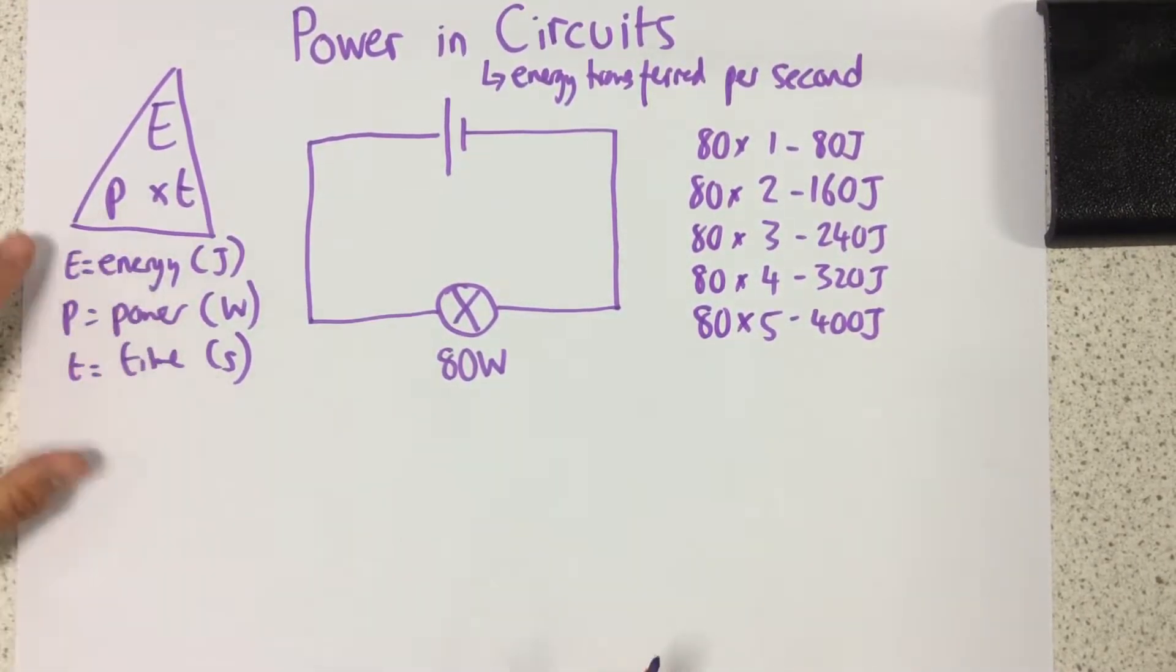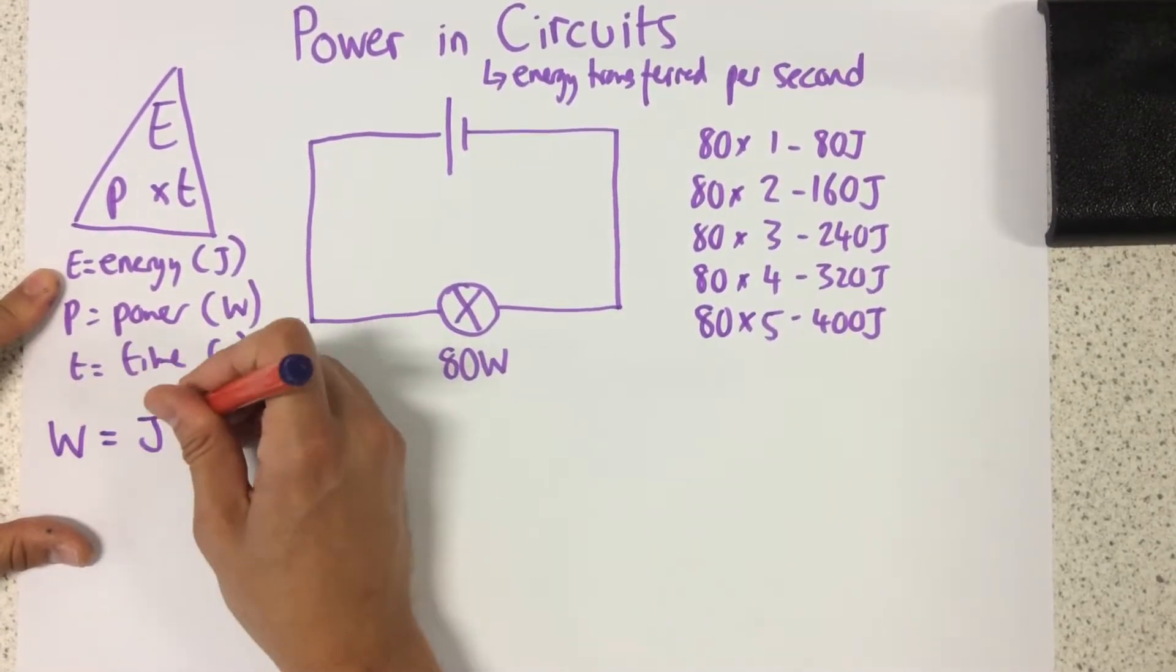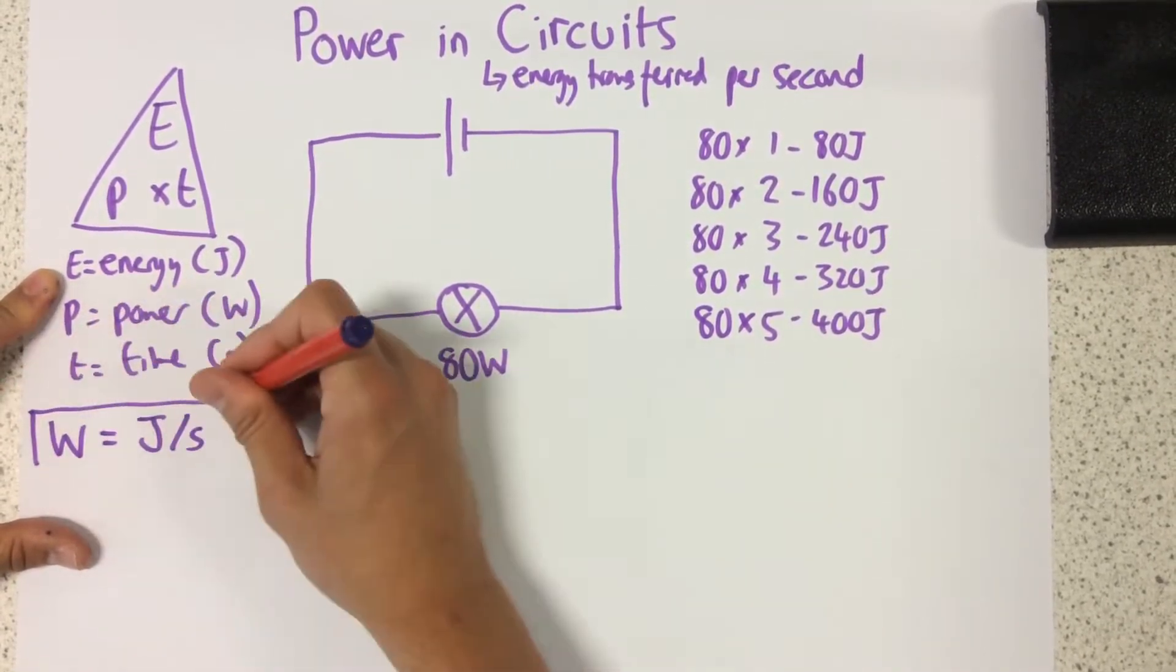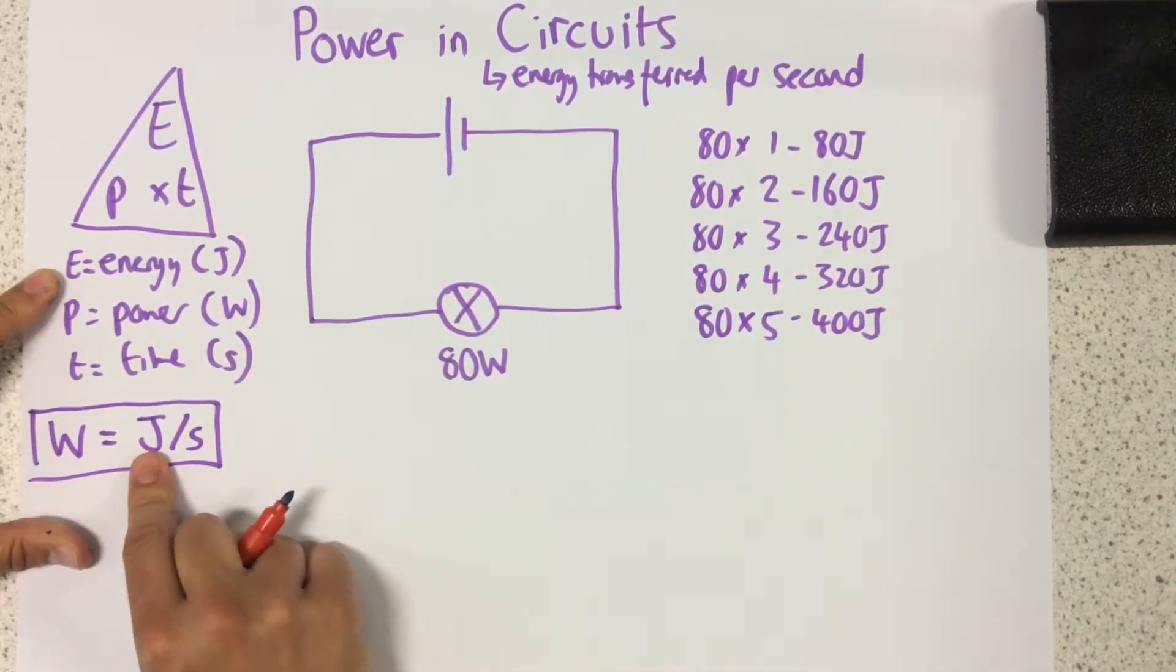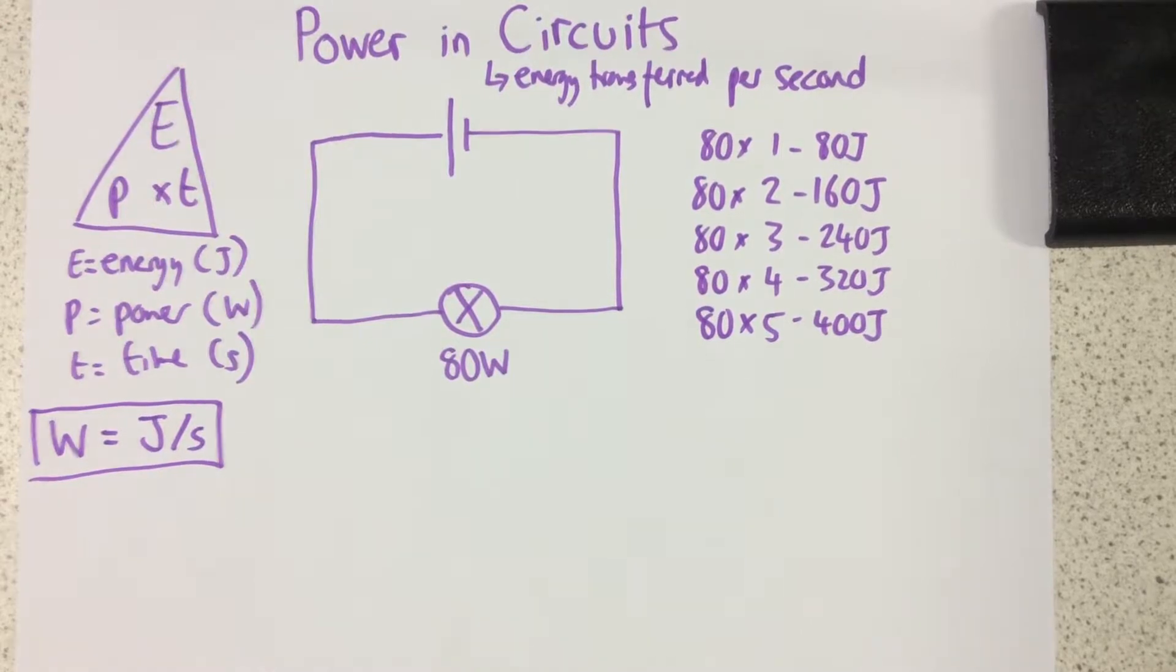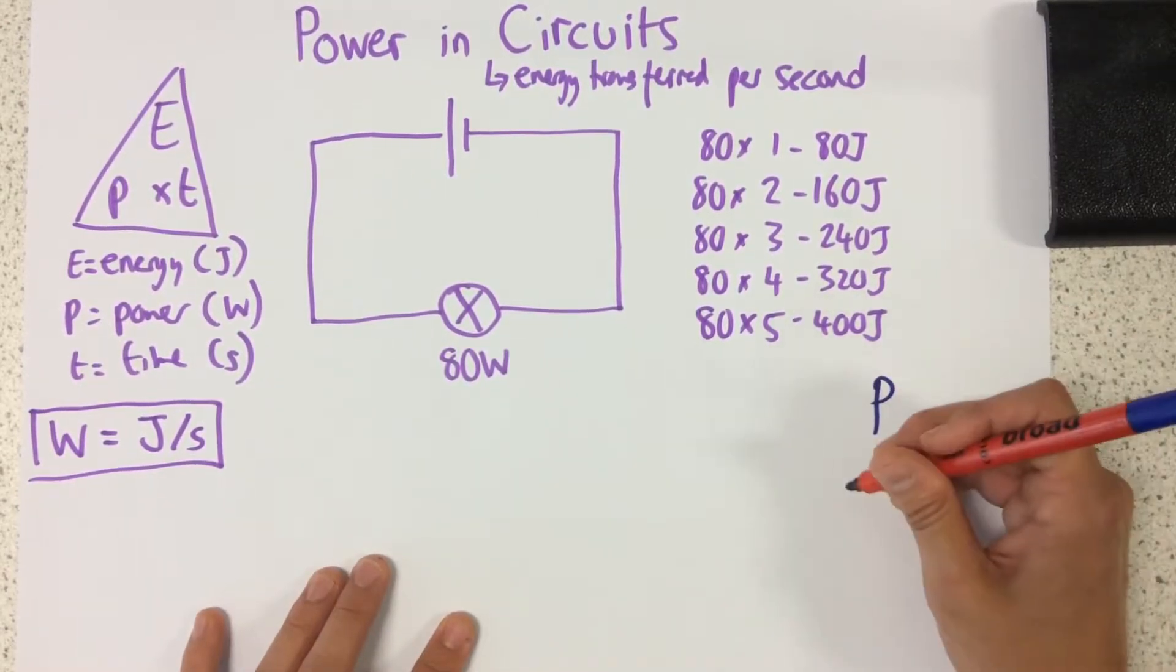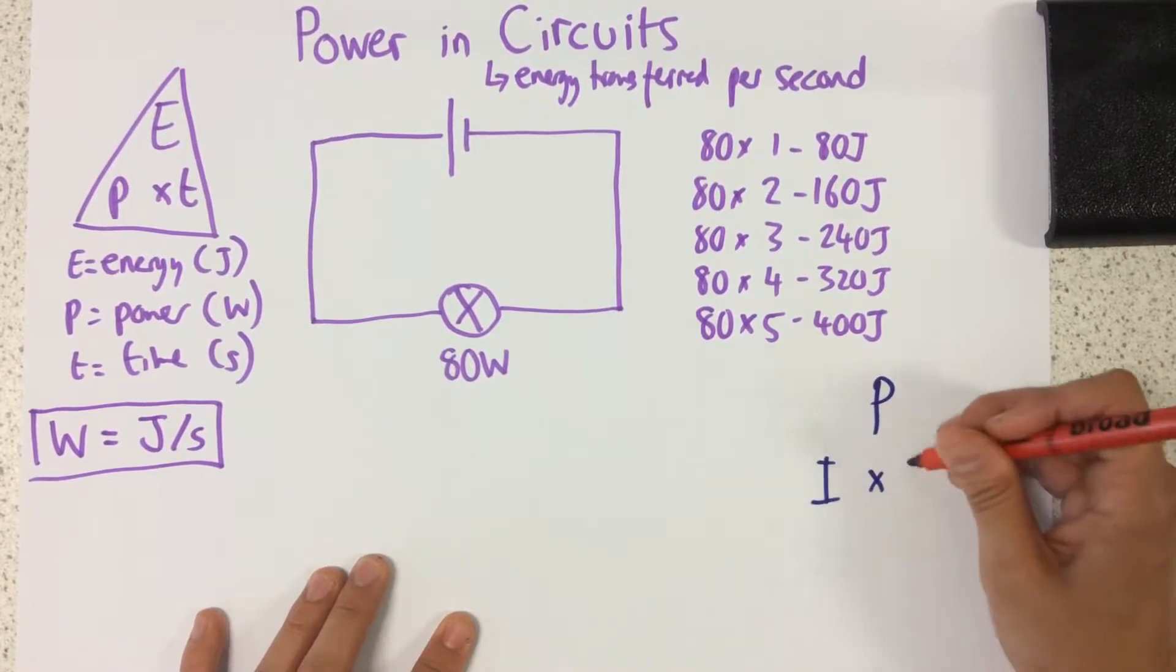So an interesting point to know as well is the unit watts is exactly the same as joules per second. That's all that watts means. How many joules are we transferring per second? Now the other equation triangle we need to know for this one is P over I times V.